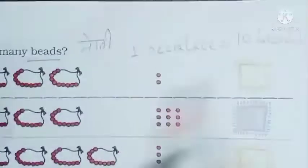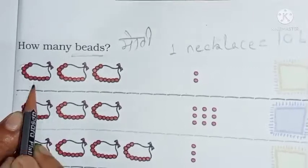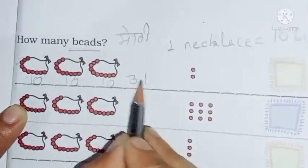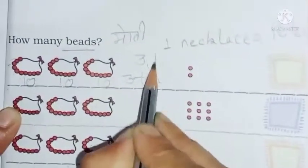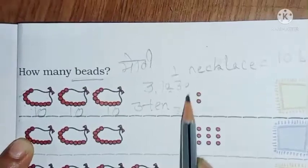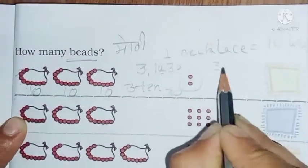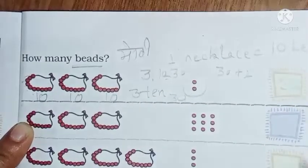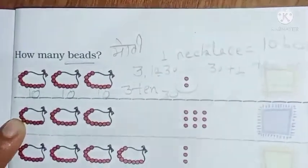So how many necklaces do we have? 1, 2, 3. So these are 10s — this is 10, this is 10, this is 10. So how many 10s do we have? 3 tens. So 3 tens means 3 × 10 = 30. And loose ones — how many? 1, 2. So 30 plus 2 equals 32. So our 1s are 2 and our 10s are 3.